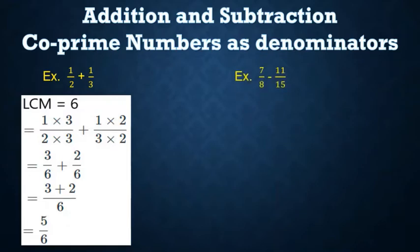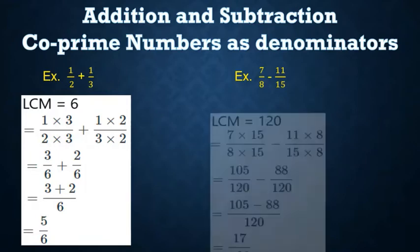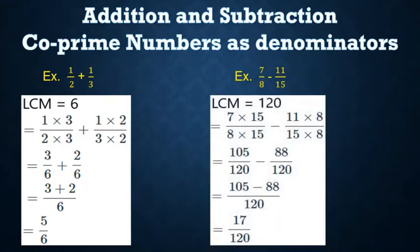Now let's use subtraction with co-prime denominators. Our example is 7/8 - 11/15. The LCM of 8 and 15 is 120. So it becomes (7×15)/120 - (11×8)/120 = 105/120 - 88/120 = 17/120. Therefore, 7/8 - 11/15 = 17/120.